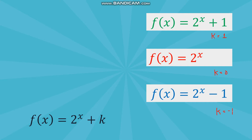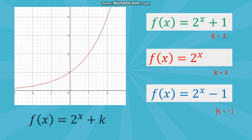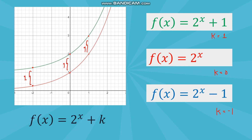Starting again with f(x) = 2 raised to x where k equals 0, if we set k equal to 1, the graph of 2 raised to (x+1) shifts 1 unit upward. Getting points from both the original function and the shifted one, you will notice that they are exactly one unit apart — confirming the graph shifts one unit upward.